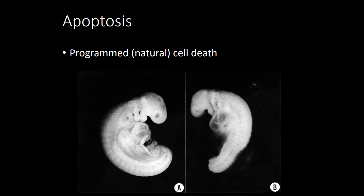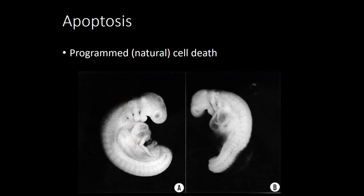Apoptosis is programmed cell death — it is a natural process that is very necessary for you to become who you're going to be. I like to show embryo pictures side by side because one is a chicken and one is a human, and it's hard to tell which is which — we look very similar in the embryonic stage. Interestingly, there are gills present in a human embryo, and we also had a tail that we kill through apoptosis so we aren't born with it. We also had webbing between our fingers that we got rid of through apoptosis. This is a totally natural process that helps us get rid of cells we don't need.